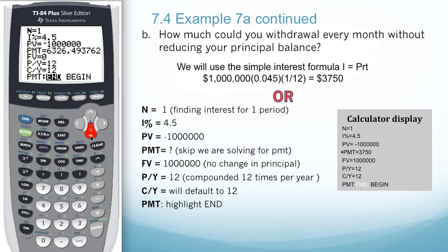We'll skip the payment for now. Go down to future value and make that $1 million positive. Going back up to the payment, we want to solve for payment by hitting alpha and enter.